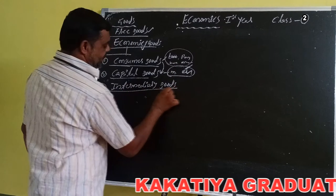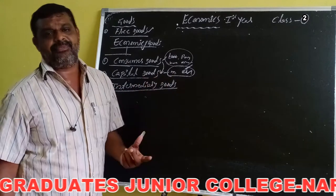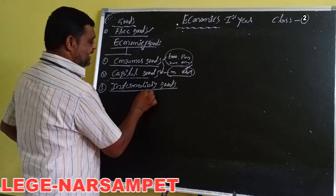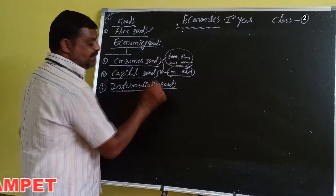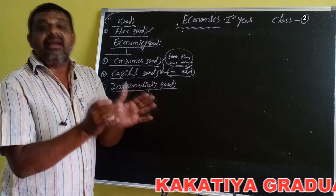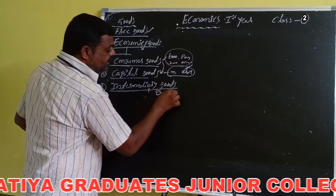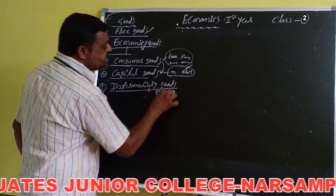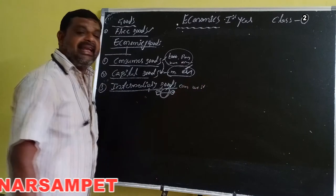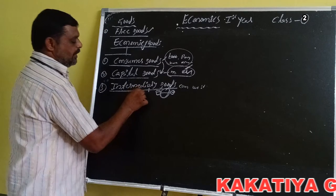Intermediary goods means goods which are under the process of production. Semi-finished goods are known as intermediary goods. Intermediary goods are neither raw material nor finished goods — they are under the process of production. For example, cement, bricks, steel, wheat, flour, etc.